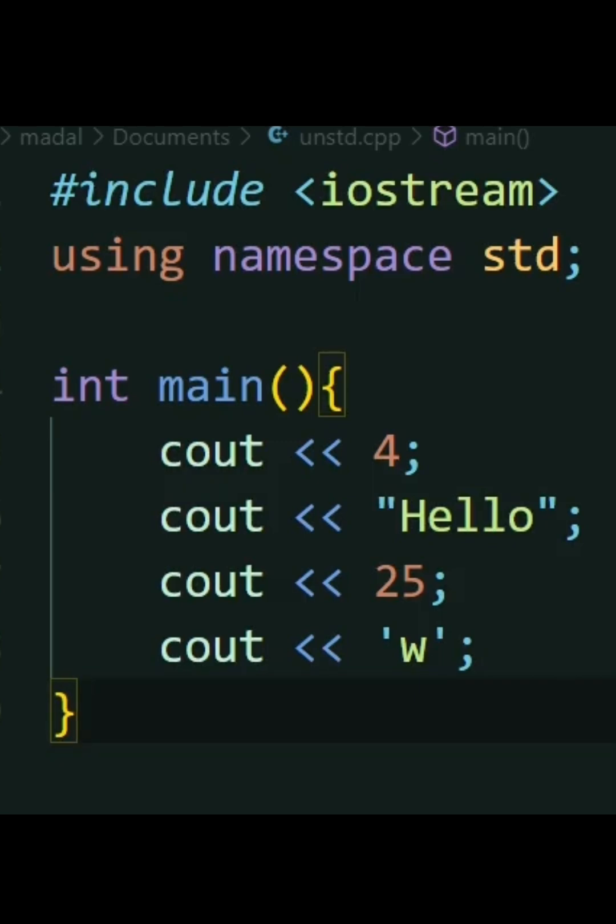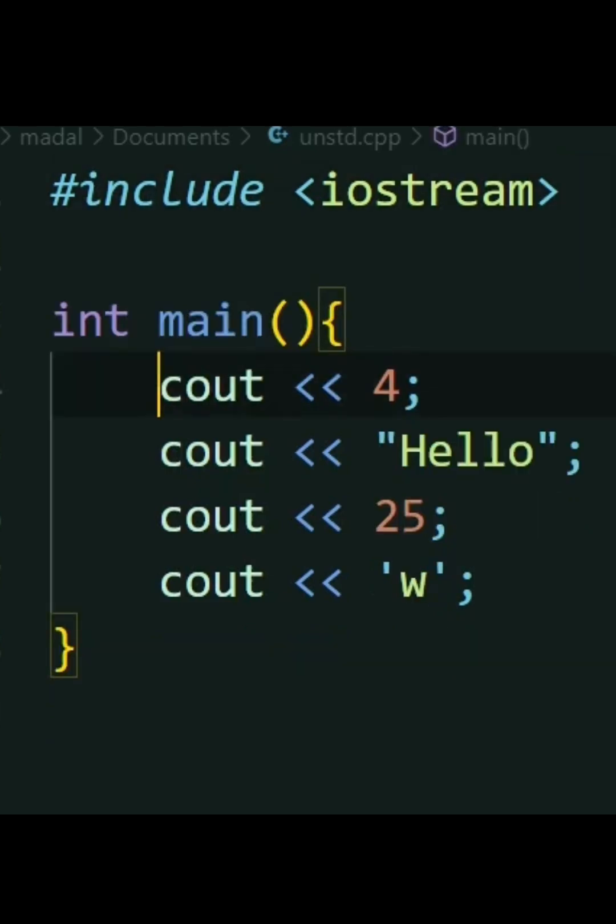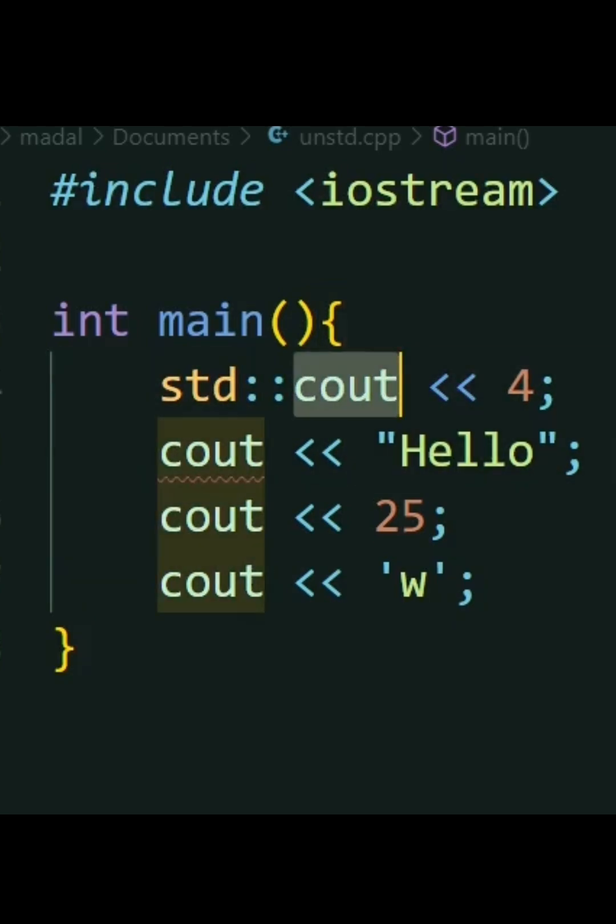So an alternative to this is, instead of saying you're using the whole namespace, every time you encounter an std object, for example cout, you say std::cout. This specifies to the program that the cout you're talking about is from the std namespace.